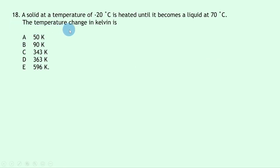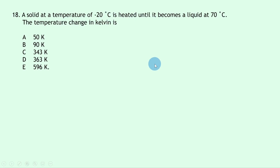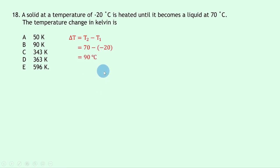Question 18: a solid at −20°C is heated until it becomes a liquid at 70°C. A temperature change in Kelvin equals a temperature change in Celsius. ΔT = 70 − (−20) = 70 + 20 = 90°C, so the temperature change is 90 Kelvin — answer B.